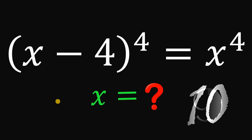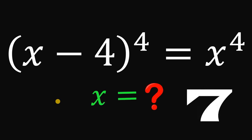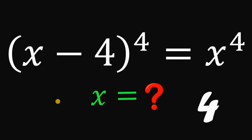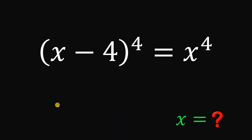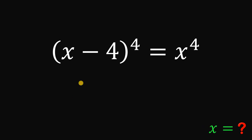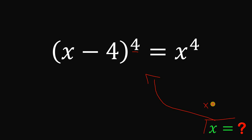You can pause this video if you want to give this problem a try. Now let's answer this question together. Given this equation, our goal is to solve for all values of x that satisfies this equation: x minus 4 raised to the power of 4 equals x raised to the power of 4. Since we want all possible values of x, it follows that x can also be a complex number.